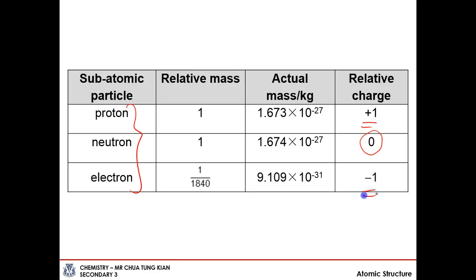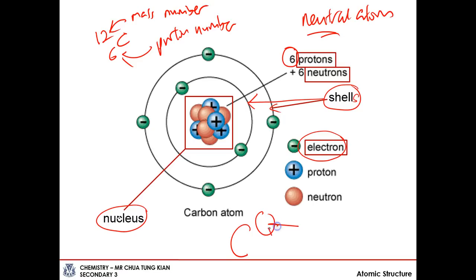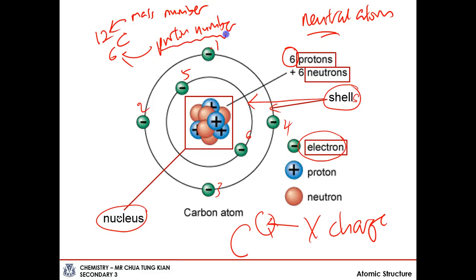Based on these relative charges and the earlier diagram, you will realize that in a neutral atom, the number of protons and the number of electrons must be the same. A neutral atom means the overall atom has no charge. For carbon, there's no charge — six electrons give six negative charges, and six protons give six positive charges, which cancel out to zero. So the proton number tells us the number of electrons in an electrically neutral atom.